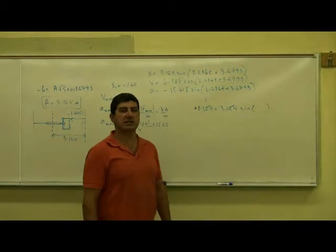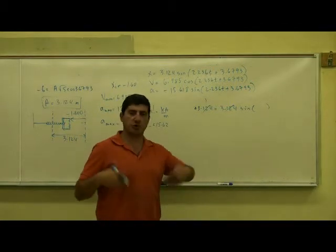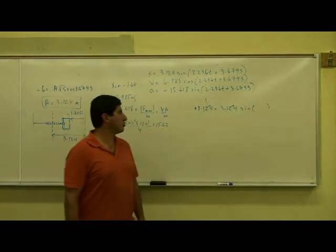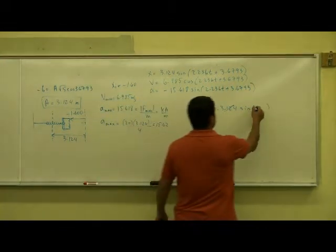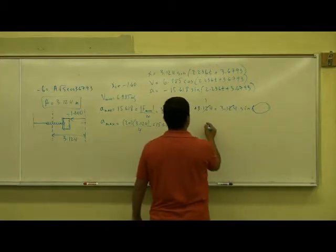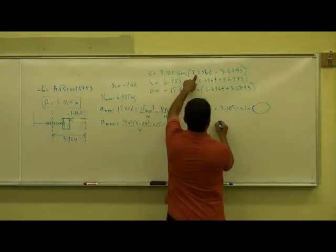So, sine of what angle is equal to 1? Then you start doing your trig. Sine of what angle is equal to 1? Sine of pi over 2. So, whatever is in the parenthesis must equal to pi over 2. And that's this thing here.